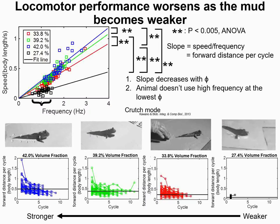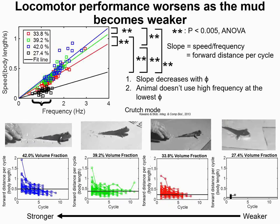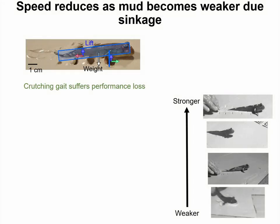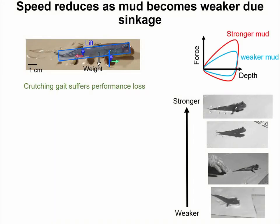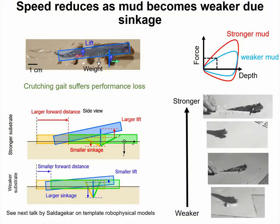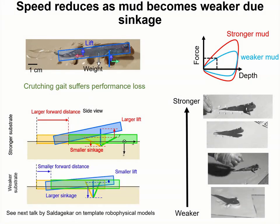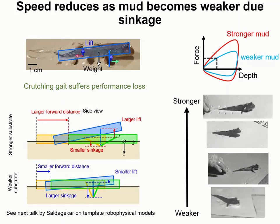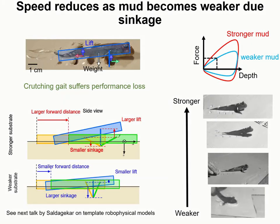The videos show that the animals sink in more and struggle more as the mud gets weaker. In order to move forward, the lift force needs to balance the weight. On stronger mud the fish sinks less, whereas on weaker mud, in order to generate the same force, if the fin motions are not adjusted, the fish sinks more, which causes more mud to stick to the belly and prevents it from raising, reducing the animal's speed.